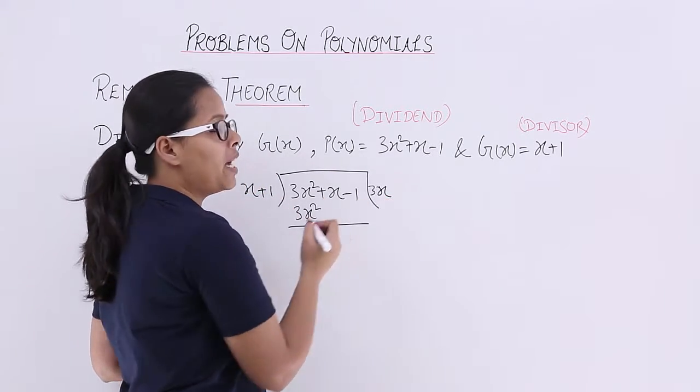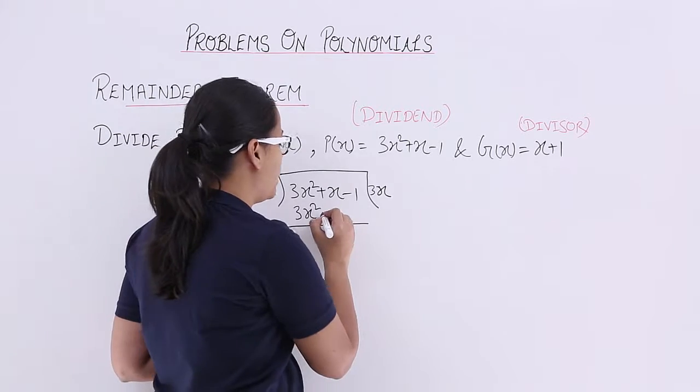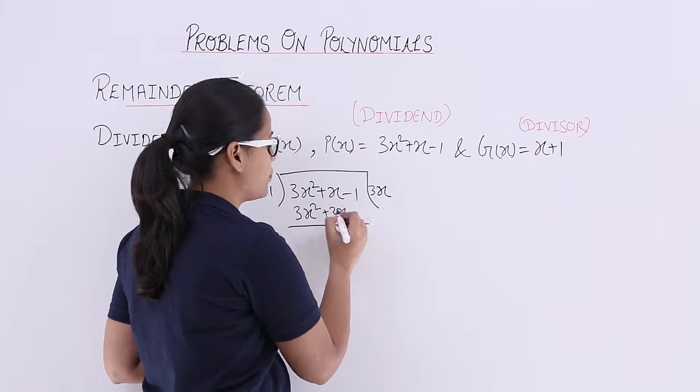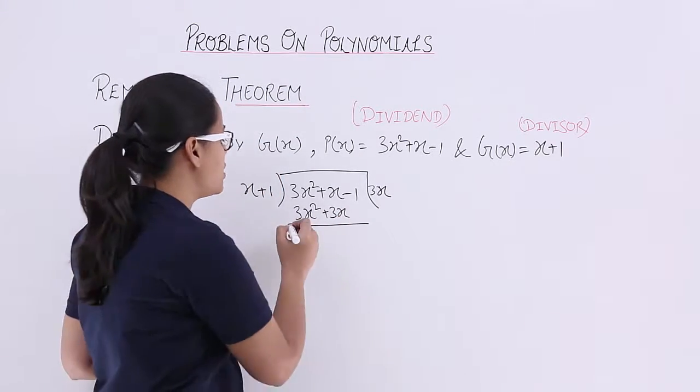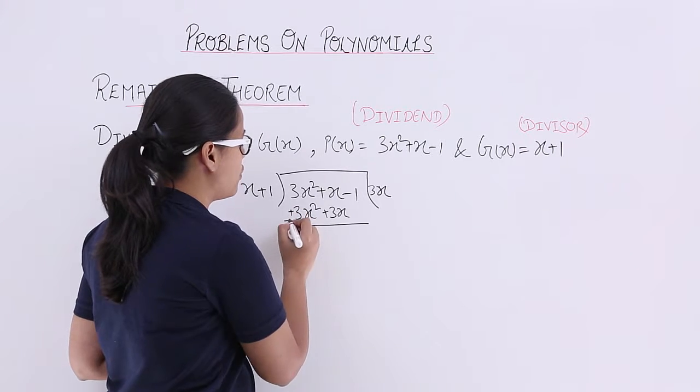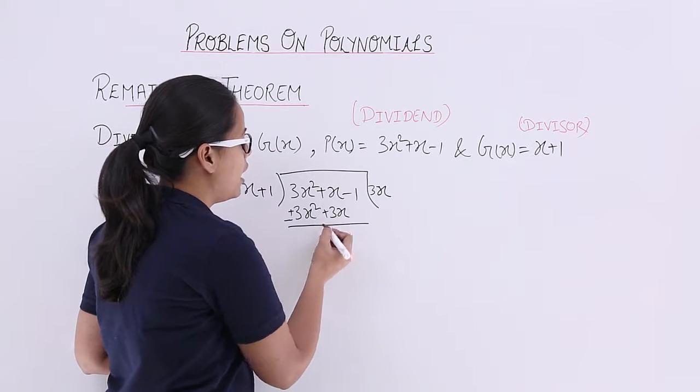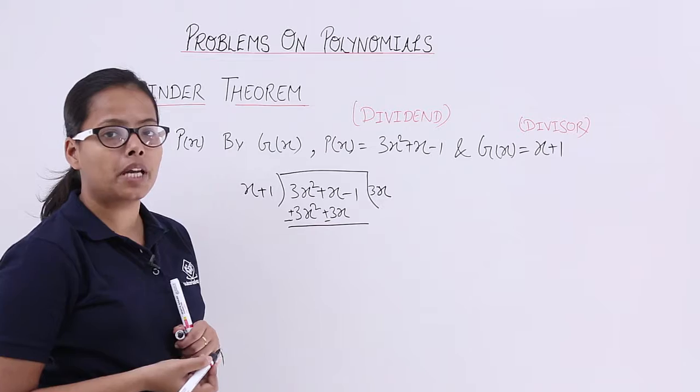And when you multiply this 1 with 3x, you will get +3x. Now, change the sign. It is positive 3, so it will become negative.